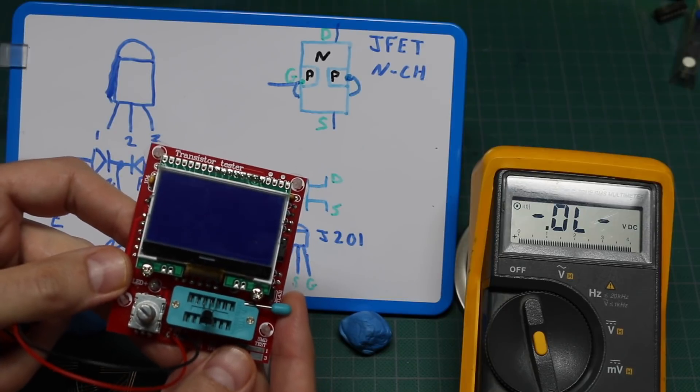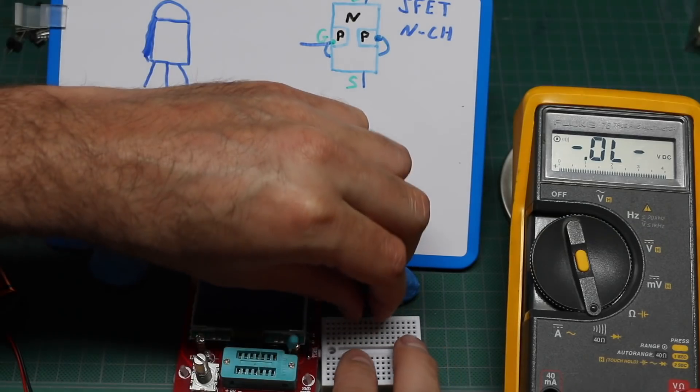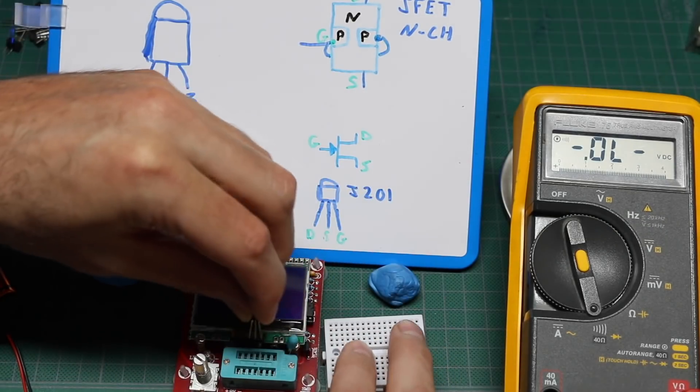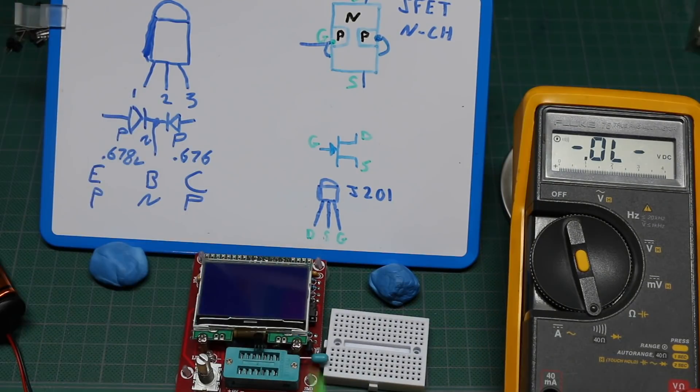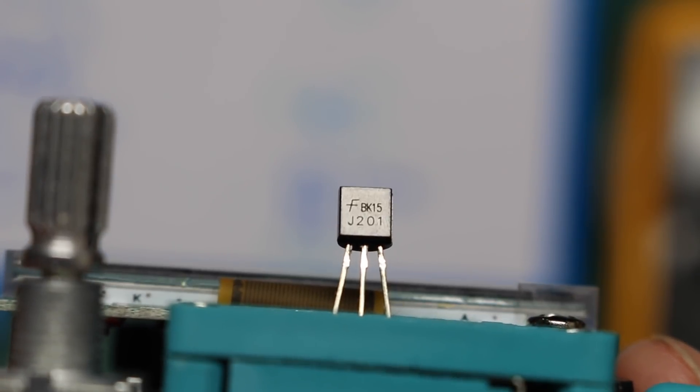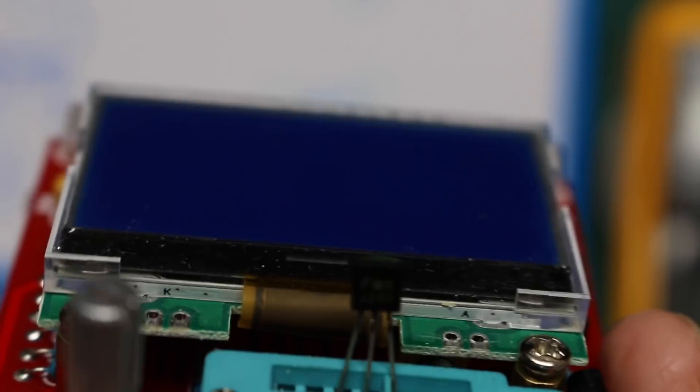Let's see what's happening. I'll take this mystery transistor and put it in this component tester. The pinouts are going to be numbered one, two, three from left to right. So I have this J201 in the tester. Let's see what it says.